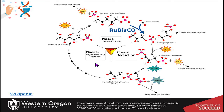Phase three involves the enzymatic steps that need to regenerate ribulose 5-phosphate. This would be similar to our oxaloacetate in the Krebs cycle — that's kind of the starting material that we go in from for our carbon fixation step.